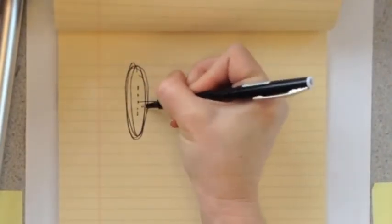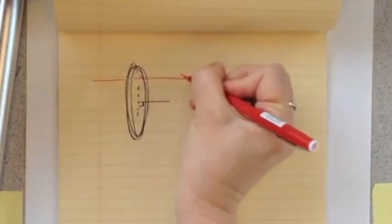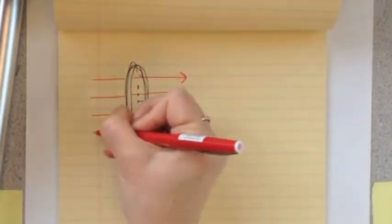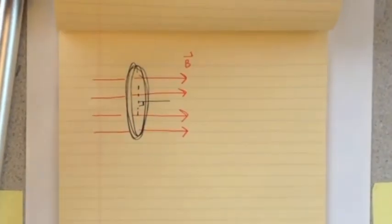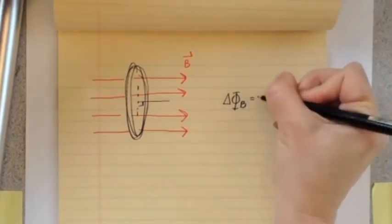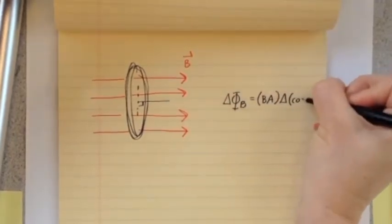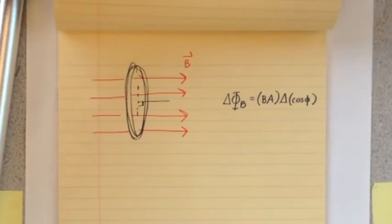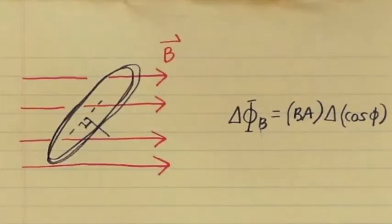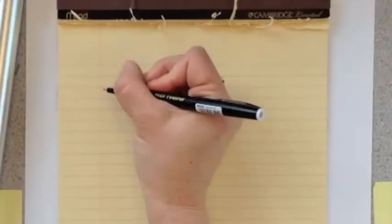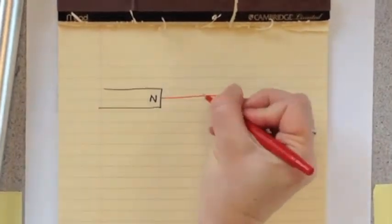The third option would be to change the angle phi between the magnetic field and the normal to the area. For example, you could rotate the coil in a fixed magnetic field. This is the principle behind an electric generator, where you create a current by rotating a coil in a magnetic field.